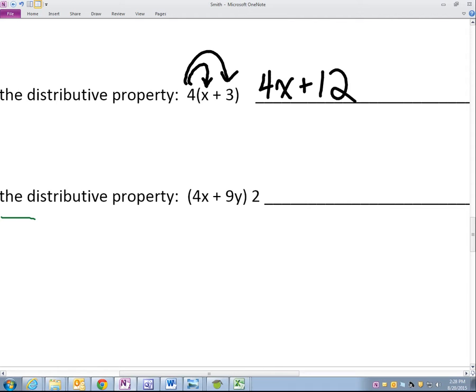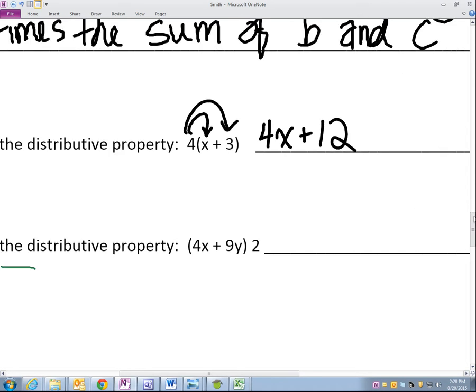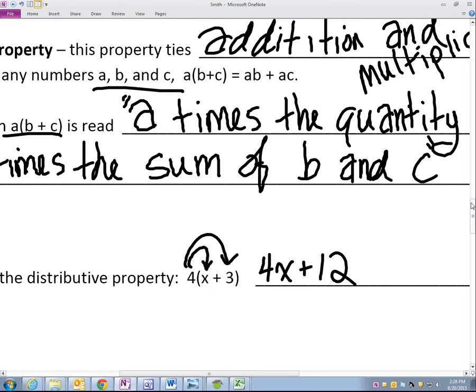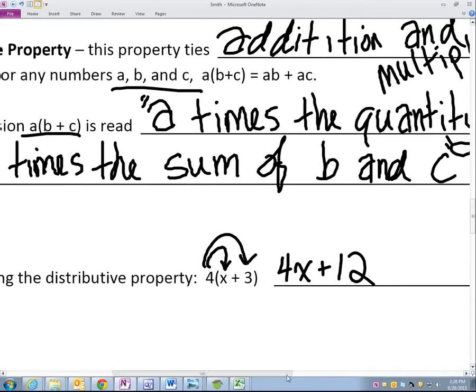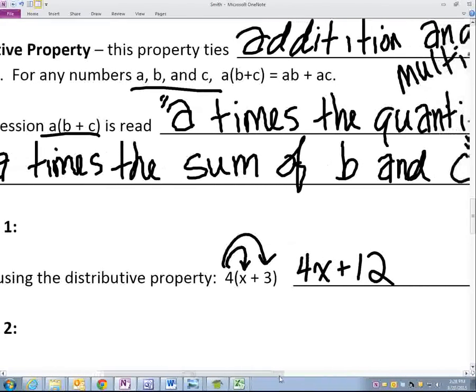So I do four X plus 12 because I'm multiplying all those together. Four times X is four X. And three times four is 12. Yes, Abby.